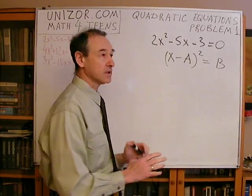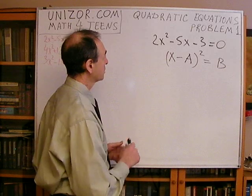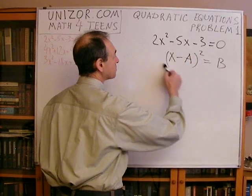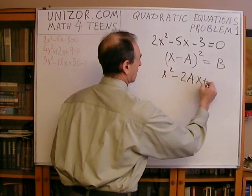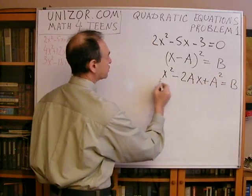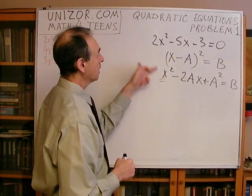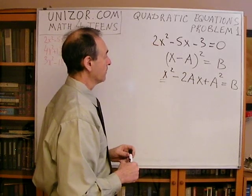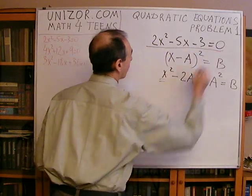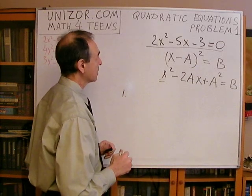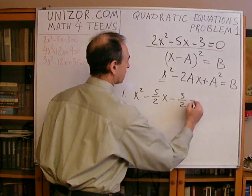I would like you to think about this — press the pause button and try to do it yourself. To have something like x minus a squared, first of all the coefficient with x squared must be 1, and this is 2 in this particular case. So to represent it in this form, I first have to divide everything by this coefficient to make it 1. My first transformation: I divide the whole equation by 2. As a result, I have x squared minus 5/2 x minus 3/2 equals zero.